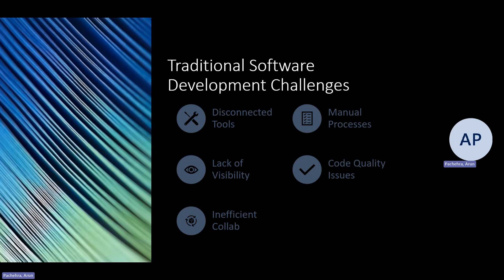The key challenges include: disconnected tools requiring switching between version control, issue tracking, and deployment tools which disrupts workflow. Increased dependency on people and manual processes. Manual builds and deployments that are time-consuming and error-prone. Difficulty tracking the progress of development and correlating code changes to specific work items. Without automated testing and structured code reviews, the code base suffers from quality issues. The lack of a centralized platform for collaboration leads to miscommunication and delays.